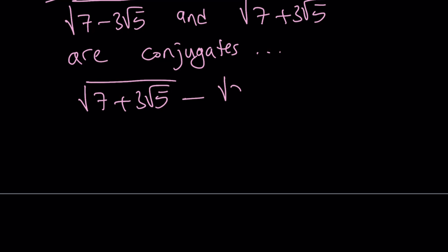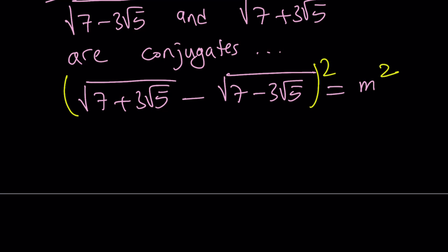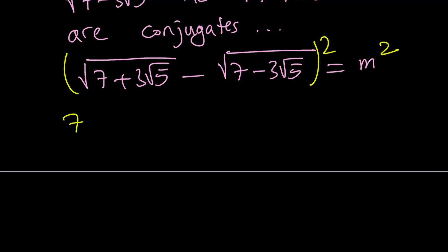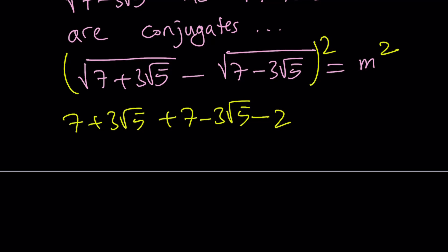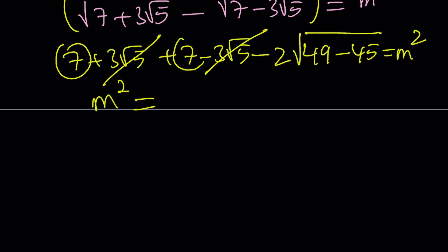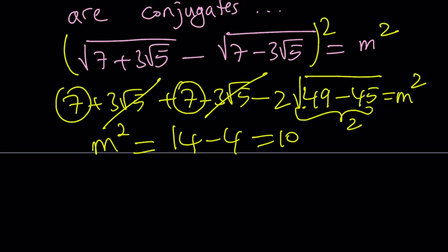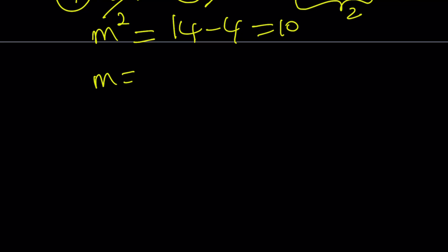Let's start with the difference — using the greater one first — and call this M. Squaring both sides using the formula for (A minus B) squared gives 7 plus 3 root 5 plus 7 minus 3 root 5 minus 2AB. From 2AB we get the product of two conjugates, which gives 49 minus 45 equals 4, so the square root is 2. The 3 root 5 terms cancel, and M squared equals 7 plus 7 minus 4, which is 10. Since M is positive, M equals square root of 10.